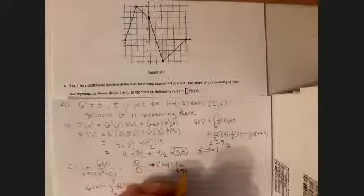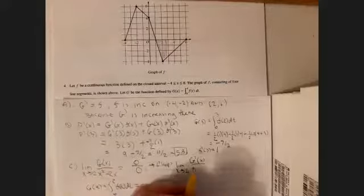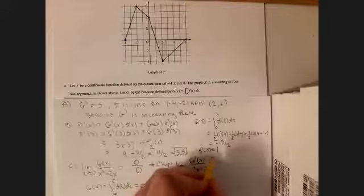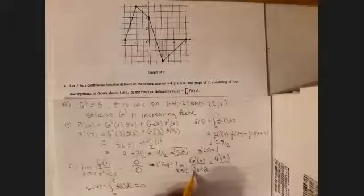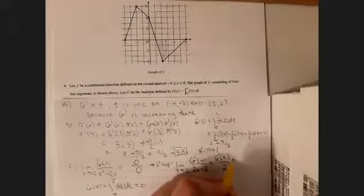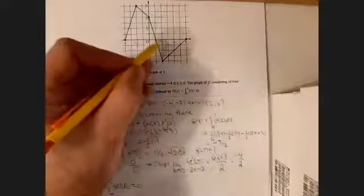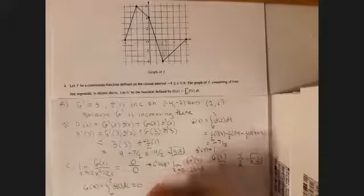I'm just going to abbreviate LHOPs. So it would be the limit as x approaches 2 of g prime of x over 2x minus 2. So that's going to be g prime of 2 over 2 times 2 would be 4, minus 2 is 2. And g prime of 2 is negative 4, according to the graph, because g prime, remember, is f. So f of 2 is negative 4. Divided by the 2, we give you negative 2. So I'm guessing they give you about maybe two points for this, one for using L'Hopital's rule and one for getting the final answer.